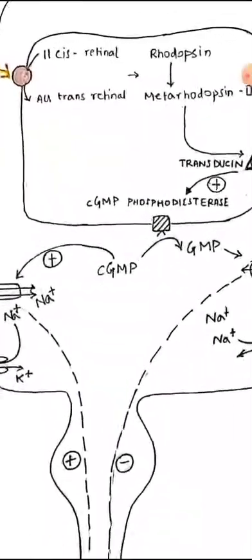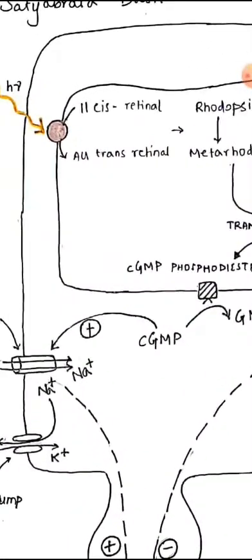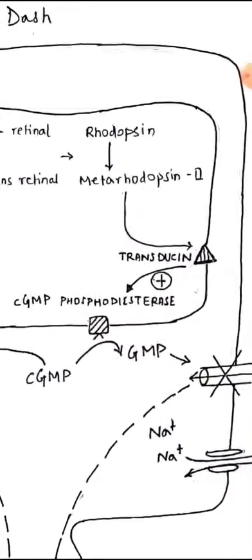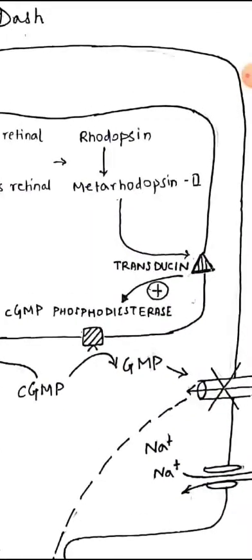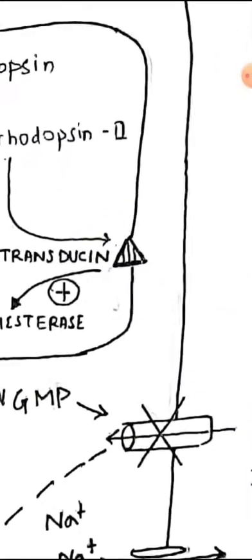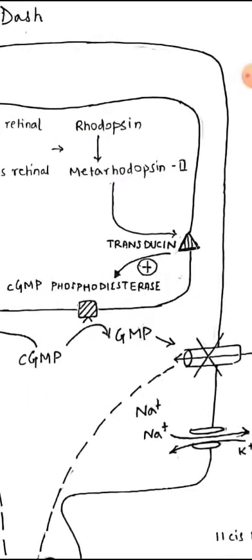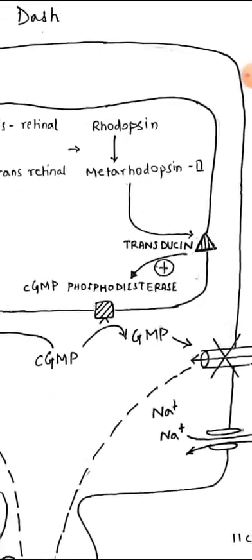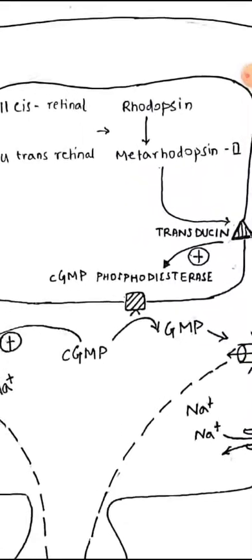Inside the rod cell, 11-cis-retinal is converted into 11-trans-retinal. This 11-trans-retinal is responsible for conversion of rhodopsin into metarhodopsin 2. This metarhodopsin 2 is responsible for stimulation of a G protein called transducin. This triangle over here. So this transducin or G protein is responsible for further activation of cGMP phosphodiesterase.